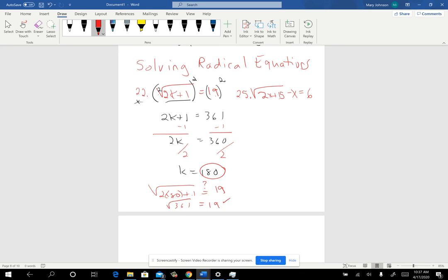All right, now 25 is a lot more complicated, because you've got some other stuff on that side besides the radical. You have this minus x. So your first step is going to be to add the x. So it's over on the other side. And so you wind up having square root of 2x plus 15 equals x plus 6.